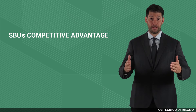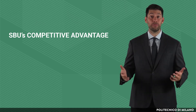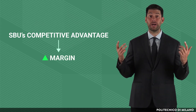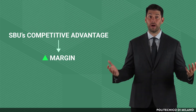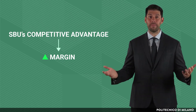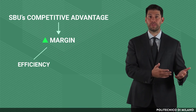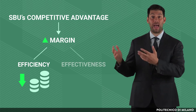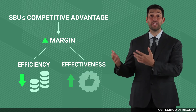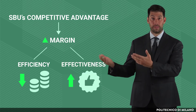The value chain is the internal strategy analysis tool to assess the competitive advantage of a strategic business unit — that is, the SBU's ability to obtain higher margins than direct competitors. These higher margins can be achieved by aiming at efficiency, so at cost reduction, or by focusing on effectiveness, that is, the creation of value for the customer.